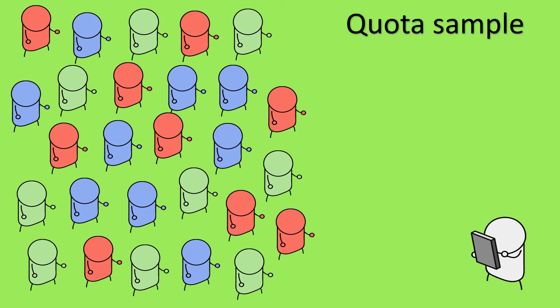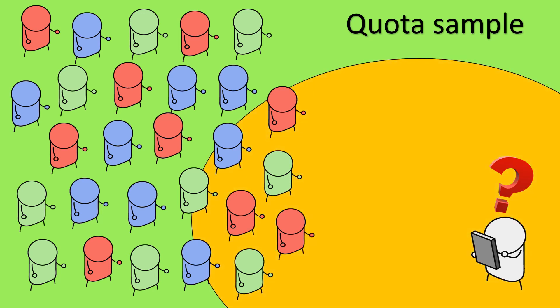Quota sampling is a method where the researcher needs to fill a quota — for example, finding five people to take part in a survey. This involves the researcher looking for the five closest available people. As a result, the sample may not be representative of the entire survey population, because these five people will likely be located in one place at a similar time, and therefore won't reflect the entire group.